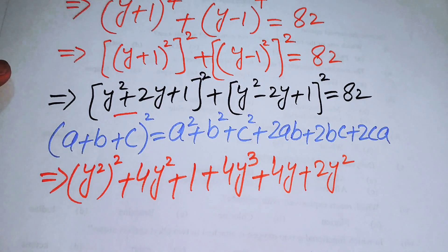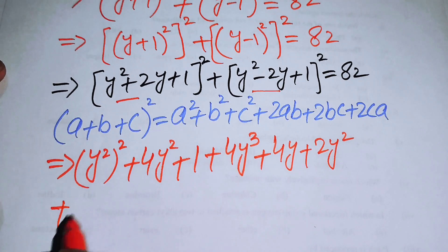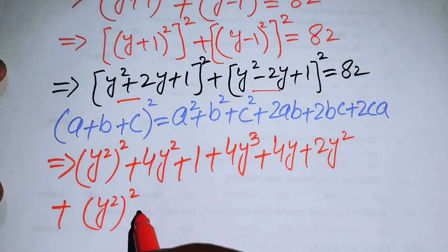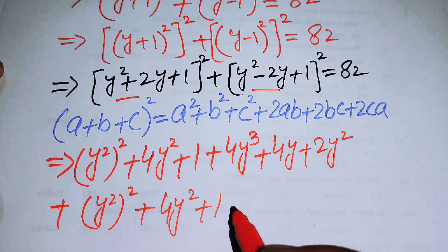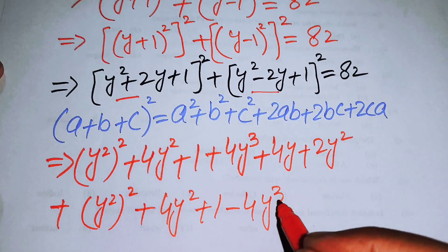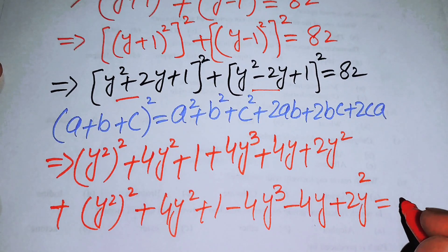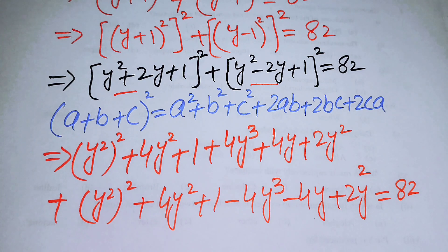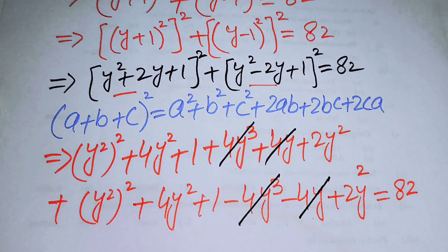Applying the same formula to the second term (y²−2y+1)², we get y⁴ + 4y² + 1 − 4y³ − 4y + 2y², all equal to 82. The terms +4y³ and −4y³, and +4y and −4y cancel each other out.